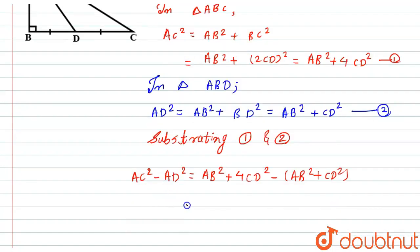Now when we open this bracket, this becomes AB² plus 4CD² minus AB² minus CD². This AB² and this AB² will get cancelled.